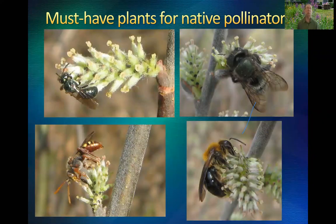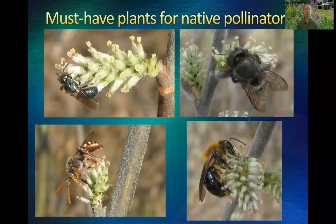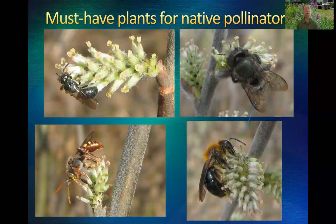The first plant I want to draw attention to is not showy at all. Willows and maples have inconspicuous flowers, but they produce nectar, they produce pollen, and they draw a tremendous variety of bees. This particular plant I photographed these bees on is prairie willow — relatively short, which is really good if you want to photograph the bees, because climbing up a 30-foot ladder into the crown of a very large willow is just not practical.